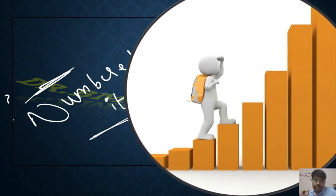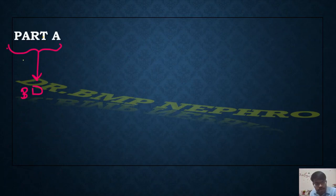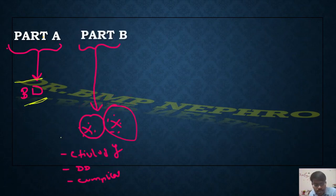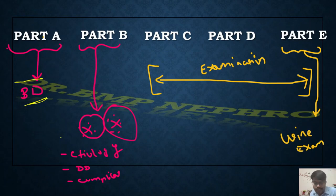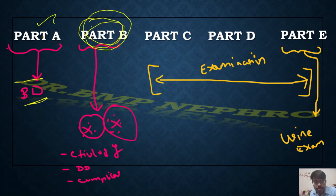The whole sequence of history and examination is divided into five parts. Part A consists of the basic details of the patient. Part B is the most important component — from Part B only we bring about the etiology, differential diagnosis, and complications of the case. Parts C and D form the examination. Part E is kept separately for urine examination, as it is commonly forgotten during case presentation.